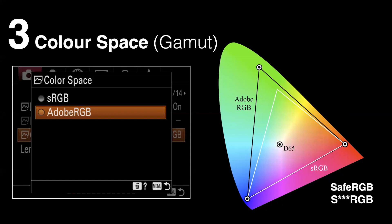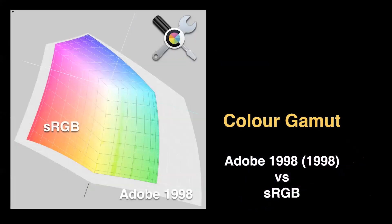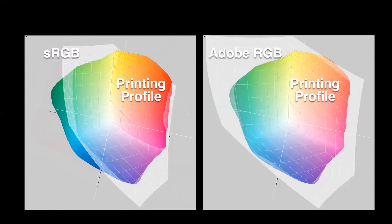Looking at a three-dimensional model, Adobe RGB has 40% more volume for some of those richer colours. Comparing this to one of my printing profiles — that colour shape on the left — you can see the sRGB white wireframe is not nearly big enough to encompass all the colours the printer, paper, and ink set are capable of producing. So if I'm shooting in sRGB or exporting images to send to the printer as sRGB, I'm shortchanging myself.